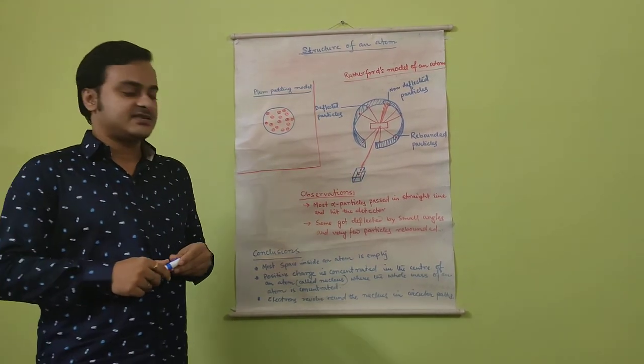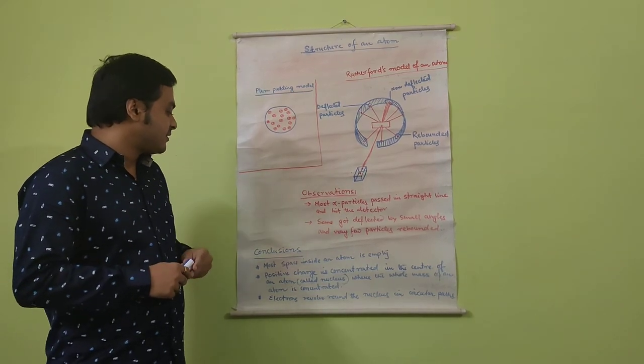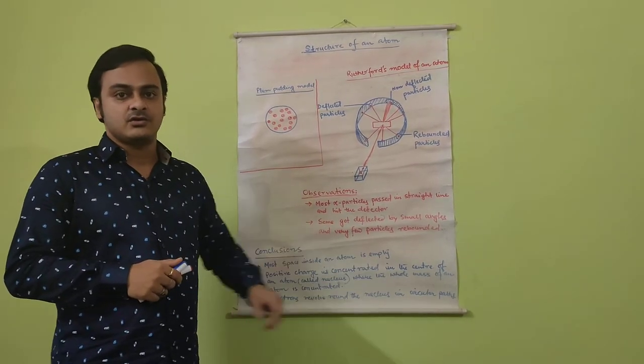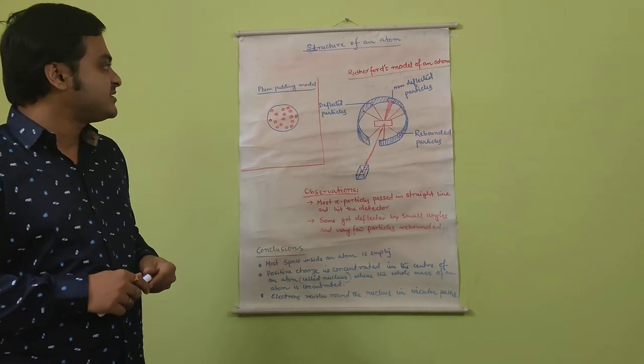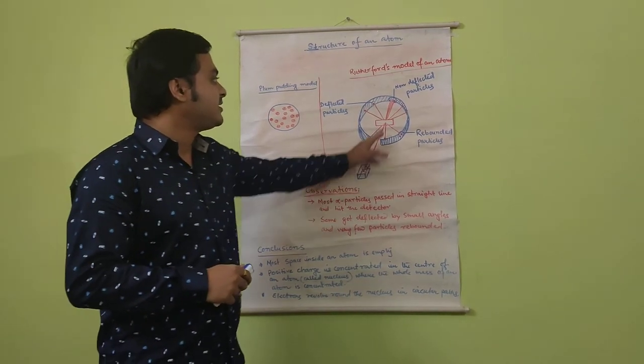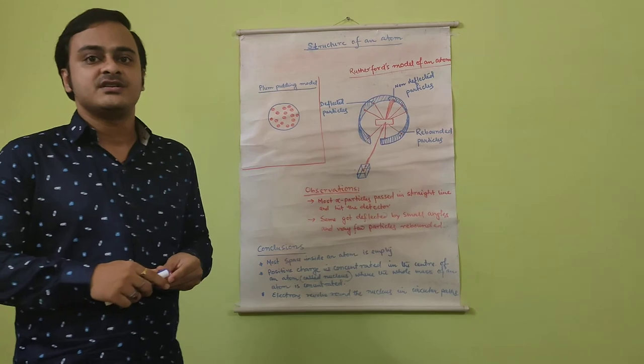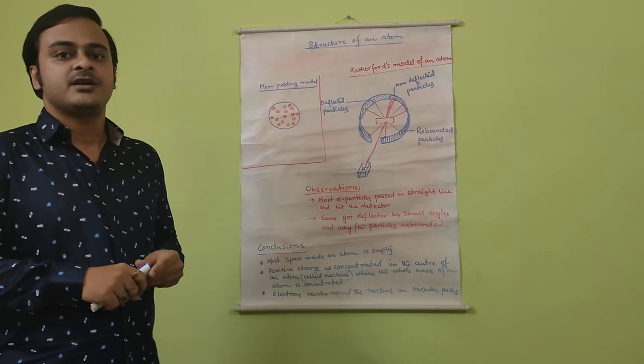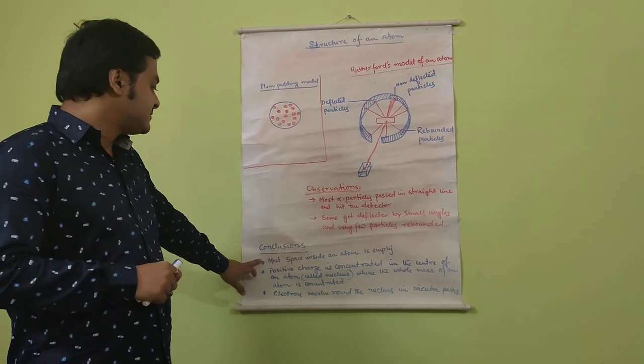What are the conclusions that can be drawn from this? Most of the space of an atom is empty. This is one of the conclusions. Why is most of the space of an atom empty? This is because most of the alpha particles traversed in straight lines without any deflection, as they did not encounter any sort of deflection from any other particles.